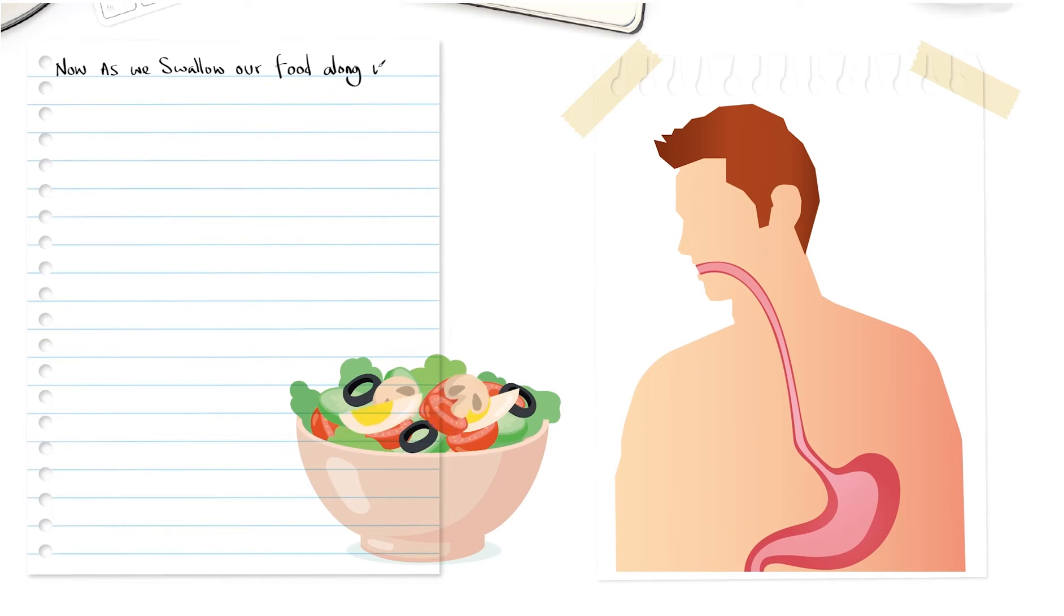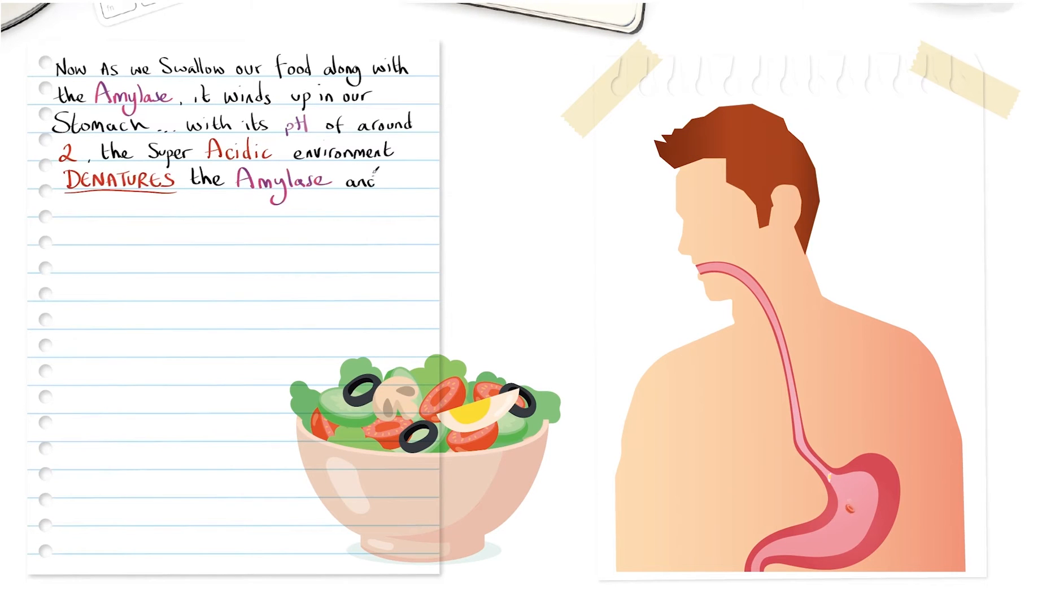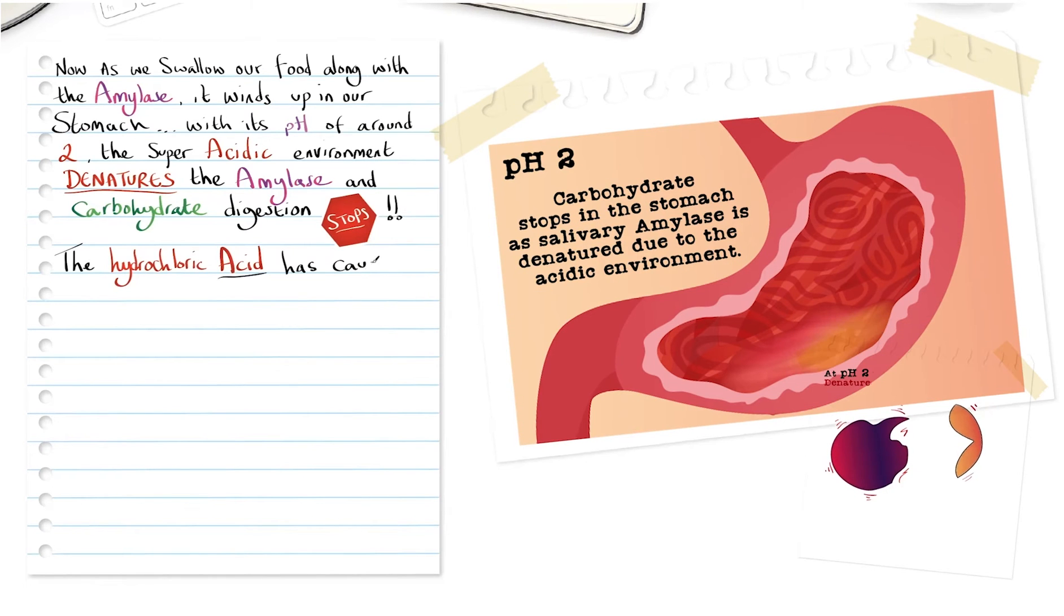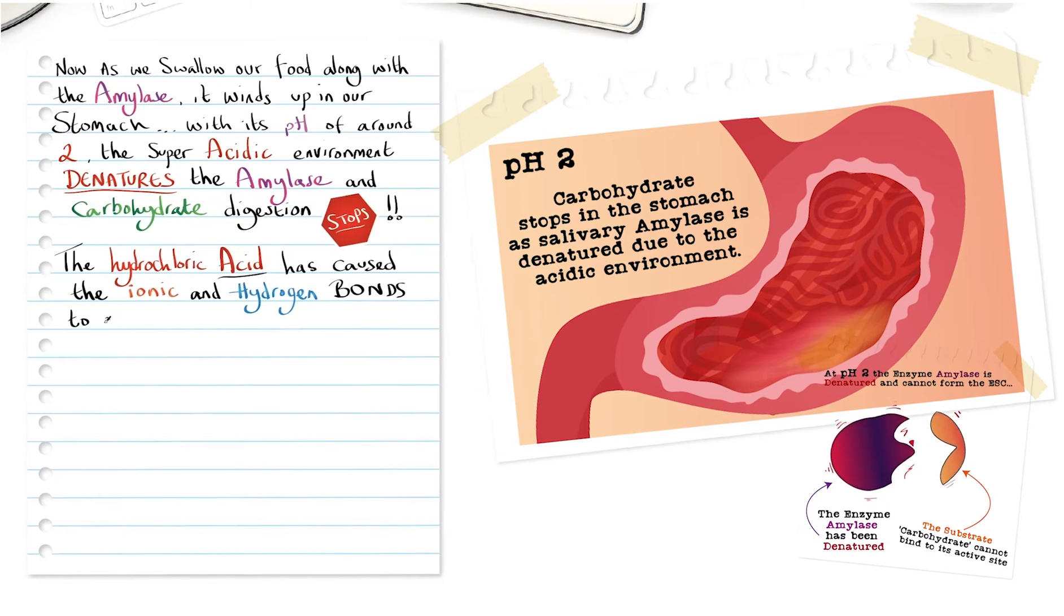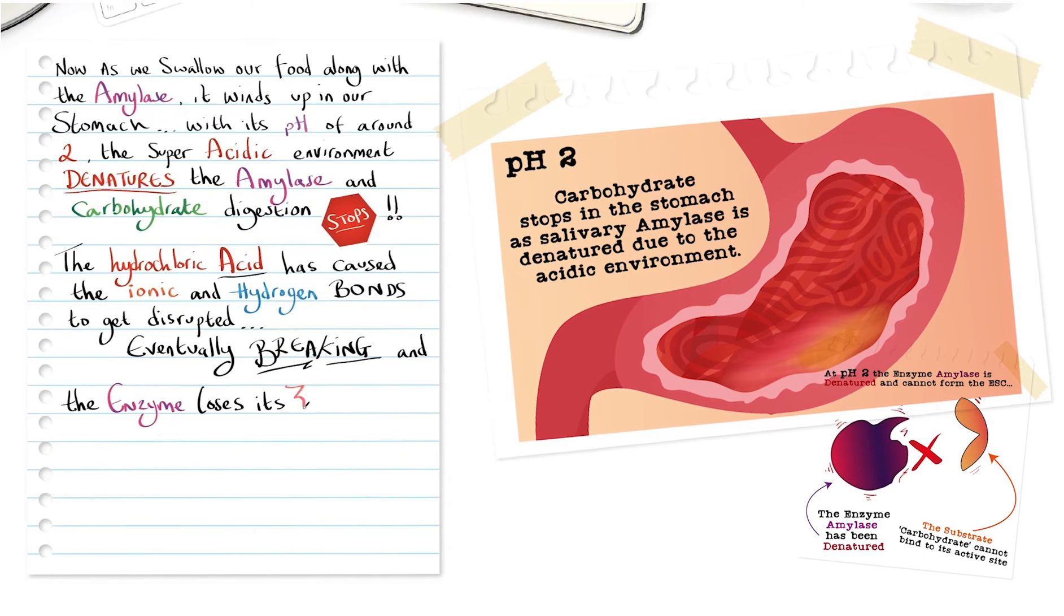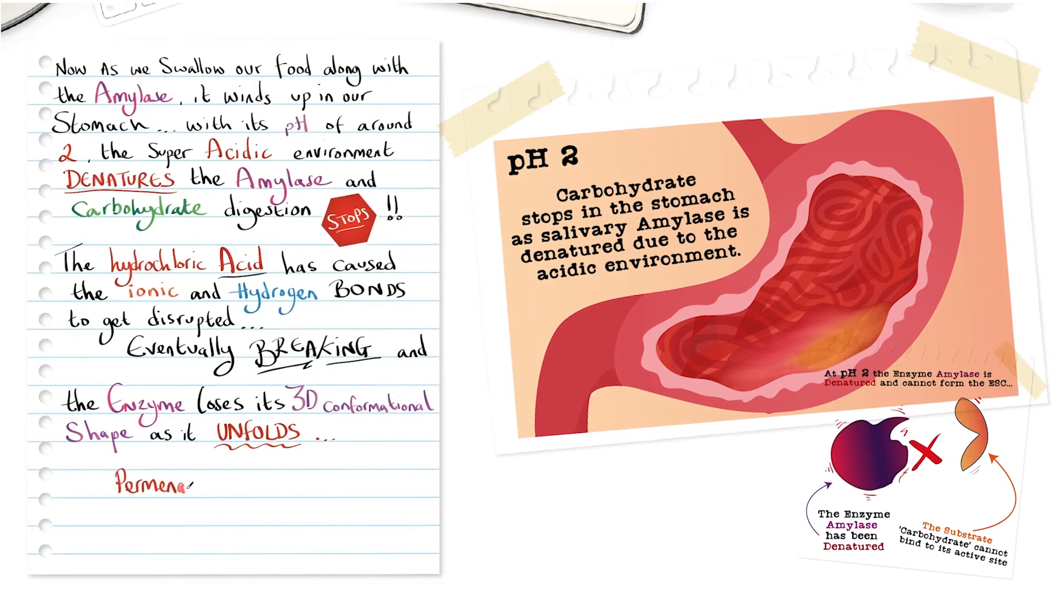Now, as we swallow our food along with the amylase, it winds up in our stomach with its pH of around two. The super acidic environment denatures the amylase and carbohydrate digestion stops. The hydrochloric acid has caused the ionic and hydrogen bonds to get disrupted, eventually breaking, and the enzyme loses its three-dimensional conformational shape as it unfolds, permanently denatured.